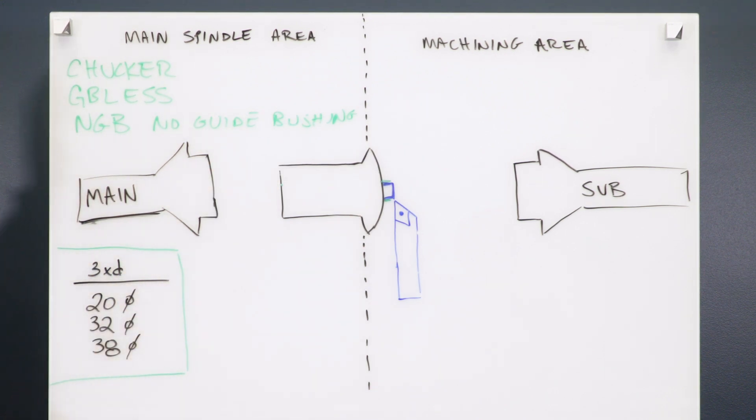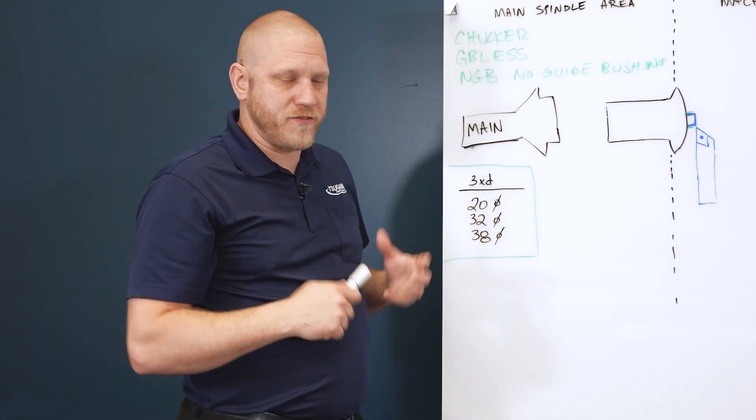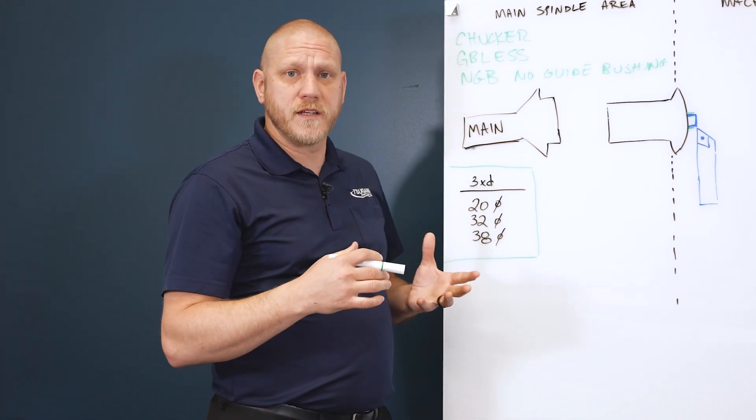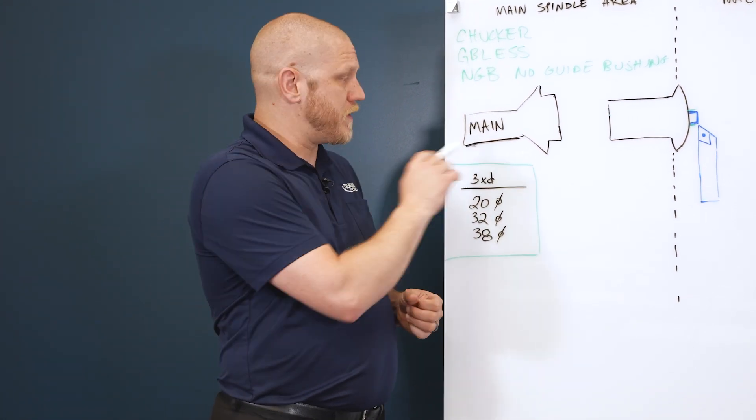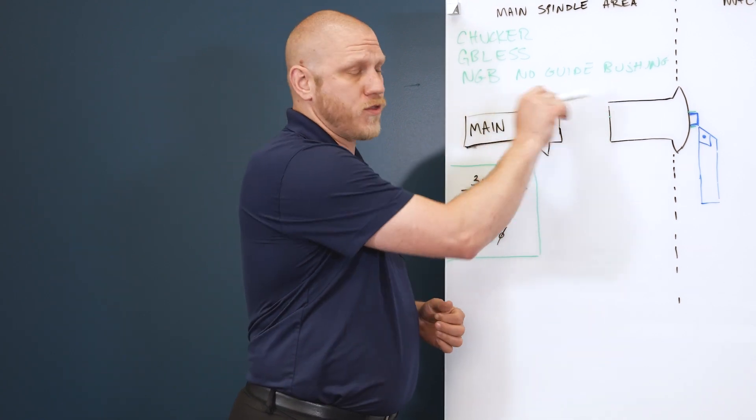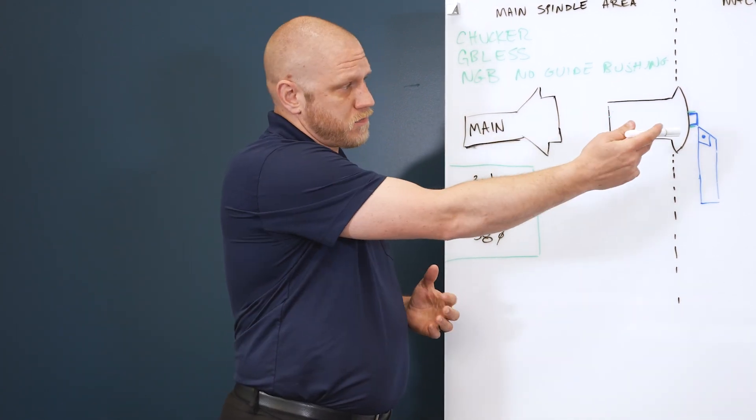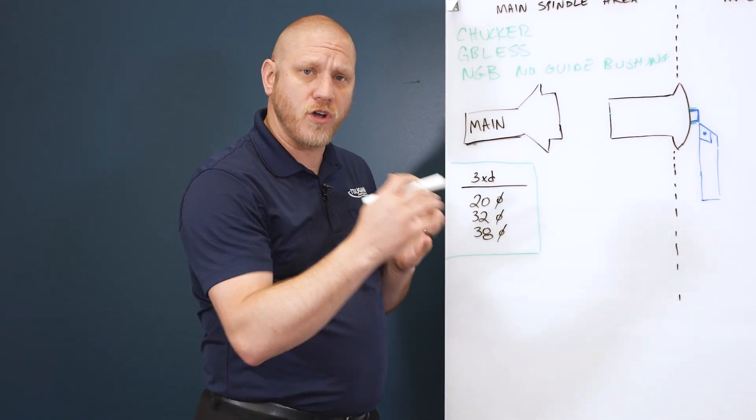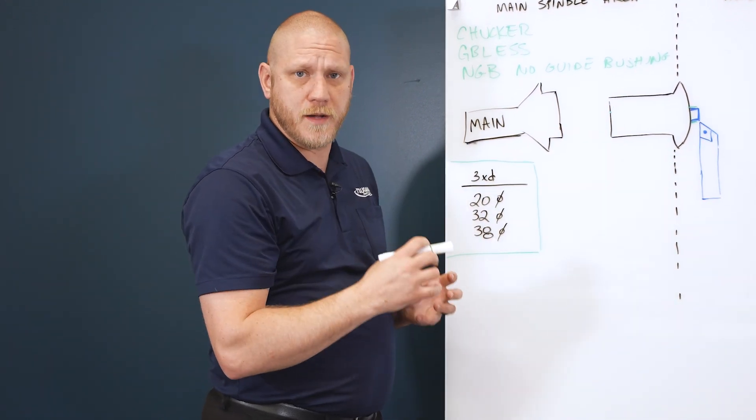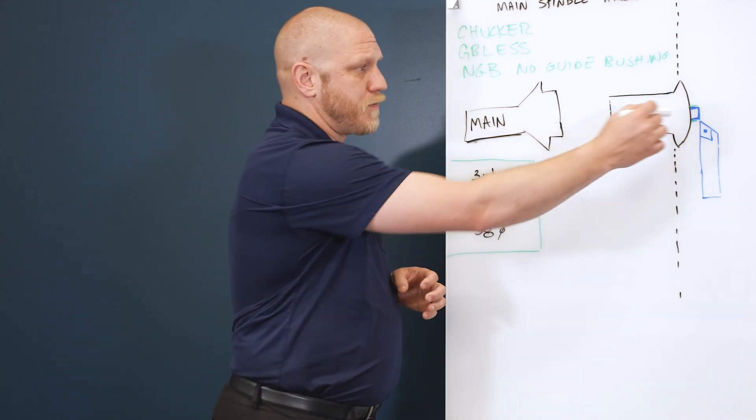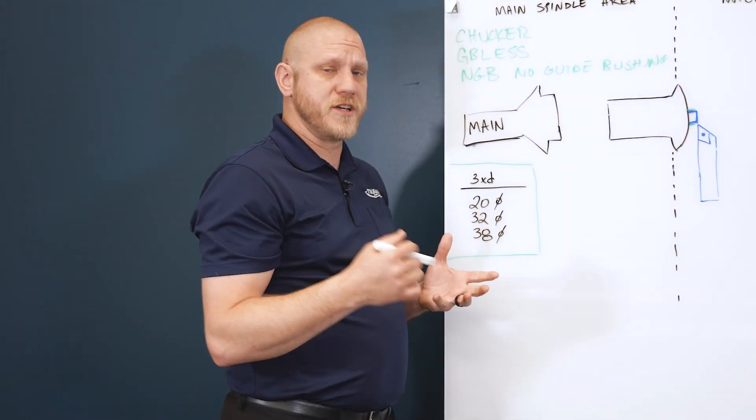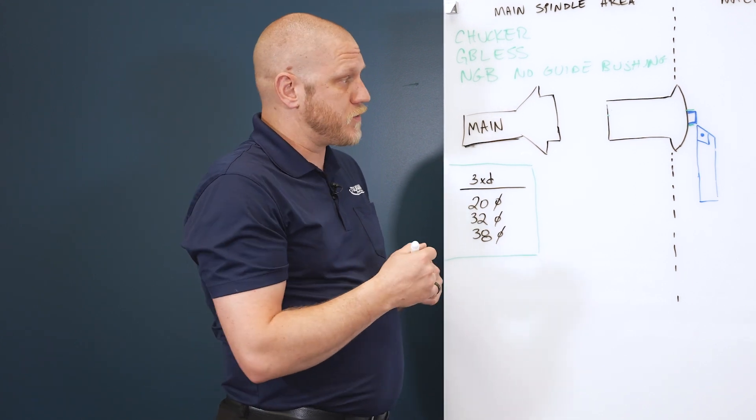What does that mean in the Swiss world? What is chukar mode and what are the benefits? Typically in Swiss, we've always been conditioned to run material through a collet, through a guide bushing, and cut our parts with support. The guide bushing is really beneficial for long, small turn diameter parts—a lot of support with the guide bushing.